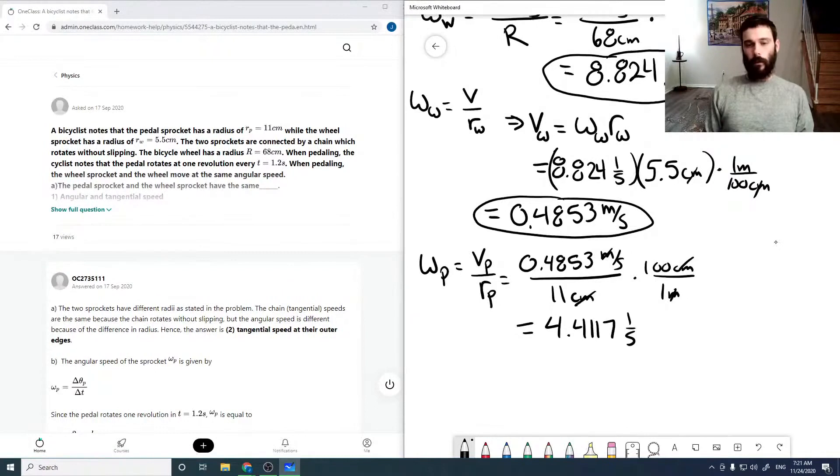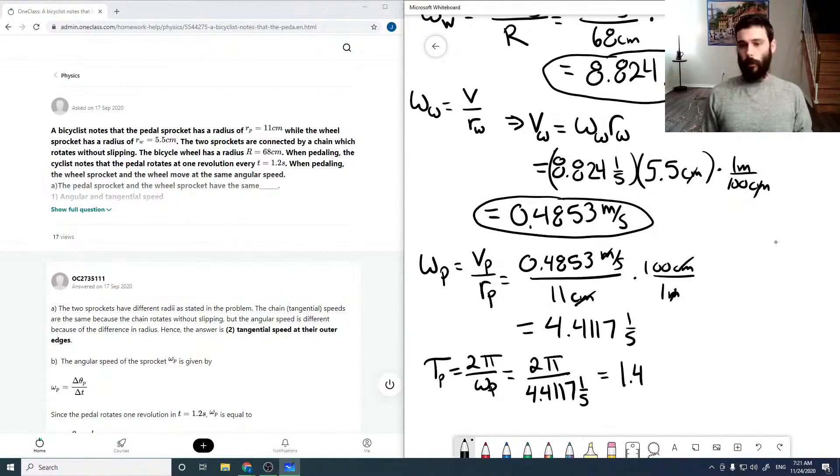When we punch in our calculator, we get 4.41171 over seconds. And now, our period is 2π over omega p. So, 2π over 4.41171 over seconds, which equals 1.424 seconds.